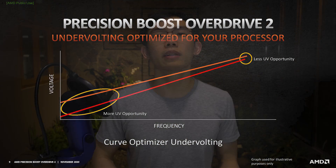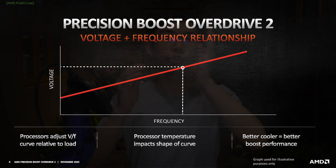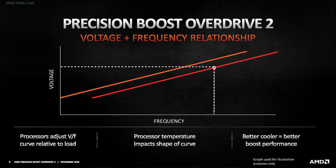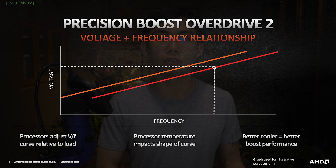What Curve Optimizer actually does is give you a knob to control the voltage-to-frequency curve. This tuning lets you shift the curve to the right (negative offset) or to the left (positive offset), which changes the frequency your CPU runs at at a given voltage point. Curve Optimizer might reduce power consumption by letting the CPU run at higher clock speeds at the same voltage, meaning it may not need as much voltage to hit the same clock speed as before.